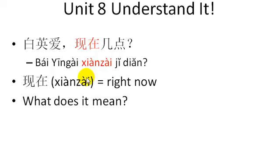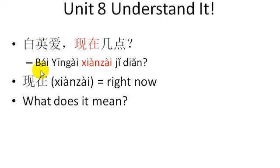It looks like Baiying Ai has bumped into Wang Peng and they're going to have a conversation. Wang Peng asks Baiying Ai a question. He says, 'Baiying Ai, 现在几点?' You know Baiying Ai is our friend here, a girl, and you know 几点 means 'what time is it?'